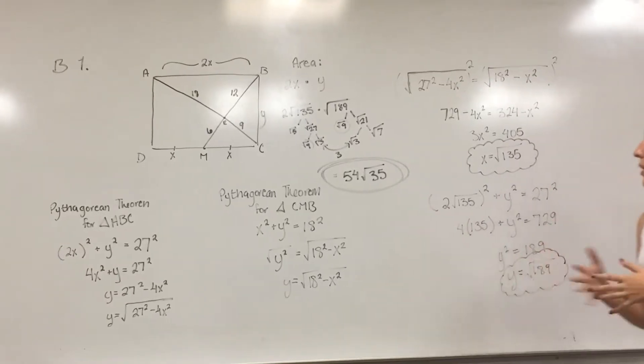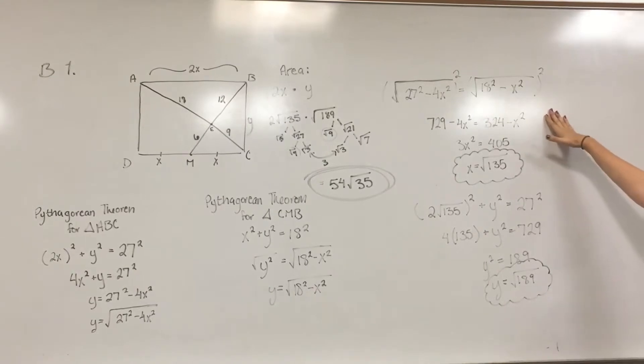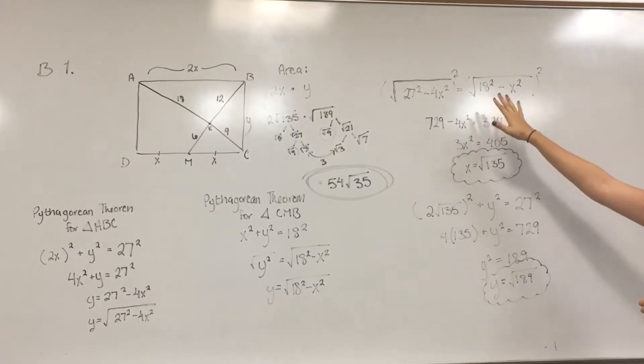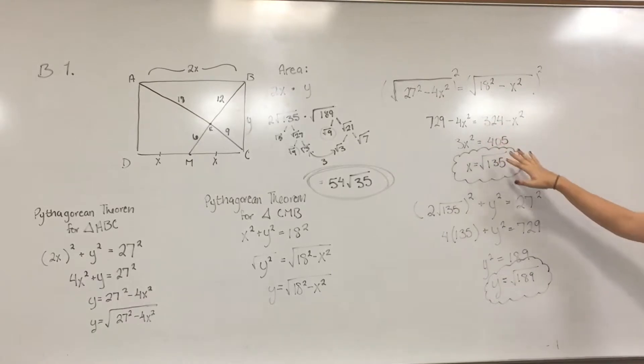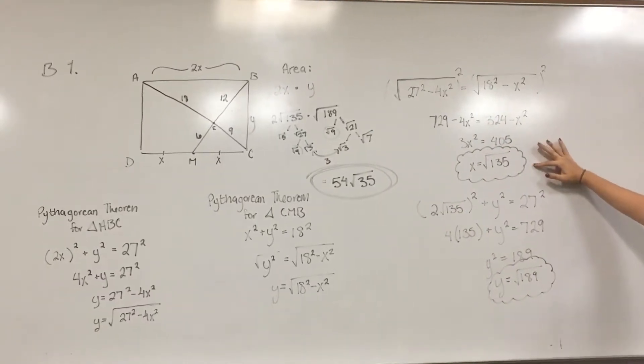And then the easiest way to solve that is to just set the y's equal to each other. So I have that work up here. So upon doing that, you can square both of them to get rid of the square roots, and then just do the work as you go down. And then you find x to equal, I found x to equal the square root of 135.